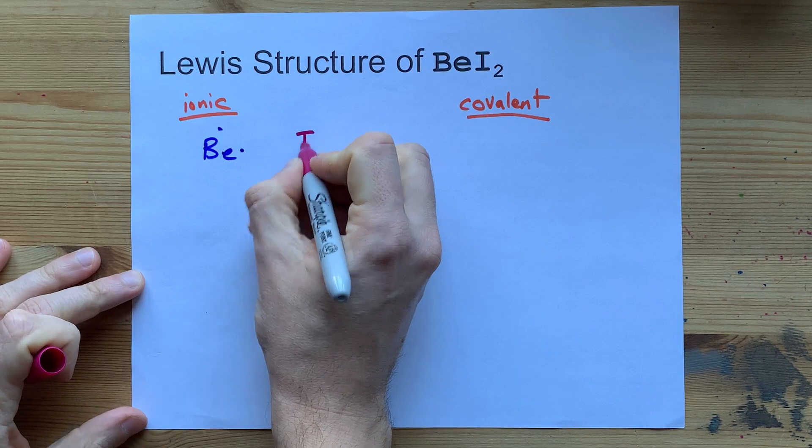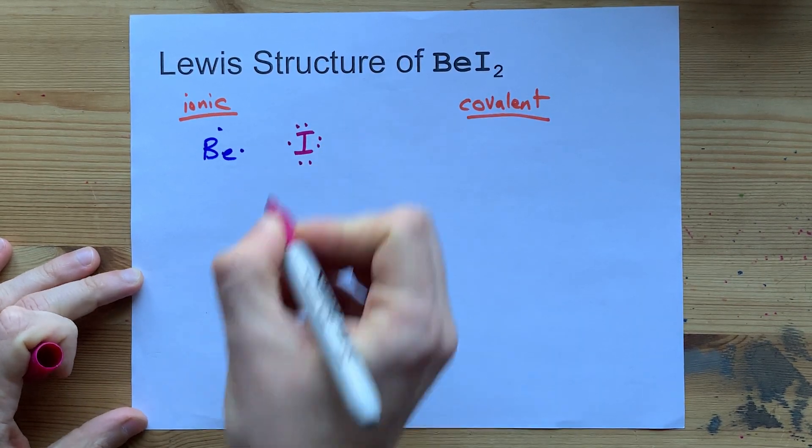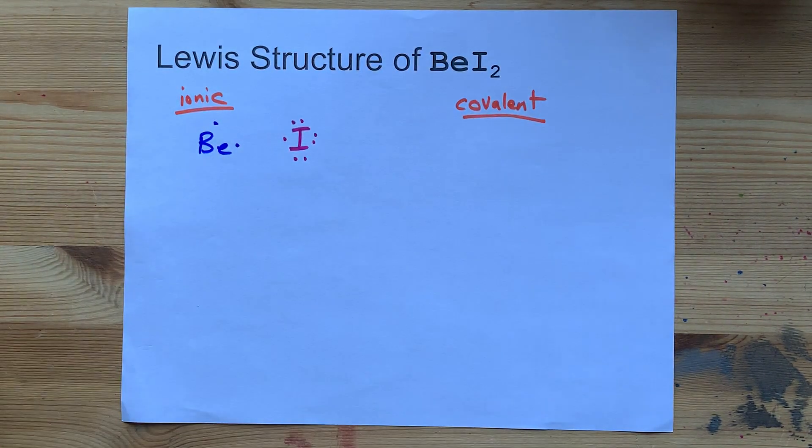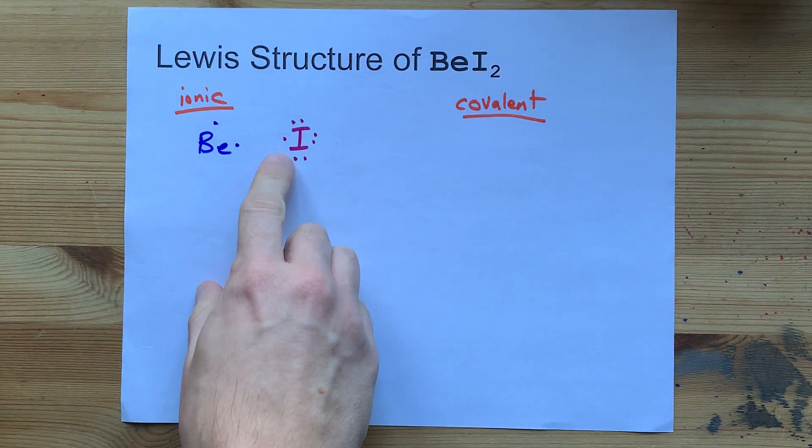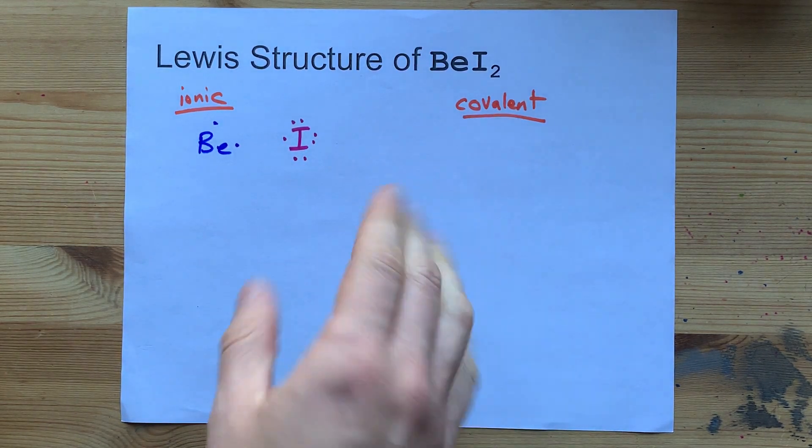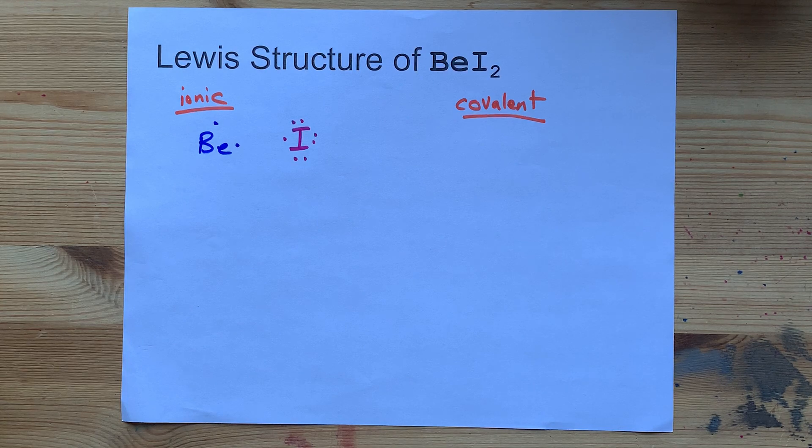I'm going to draw an iodine with 1, 2, 3, 4, 5, 6, 7 valence electrons. You probably know the octet rule. The octet rule is the idea that each atom wants either no valence electrons left in its outer shell, or a full outer shell of 8.